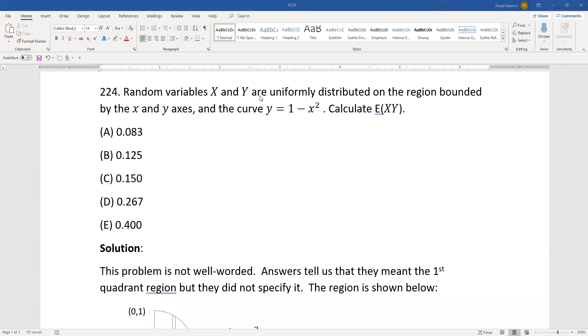Random variables x and y are uniform on the region bounded by the x and y-axis and the curve y equals 1 minus x squared. Calculate E of xy.